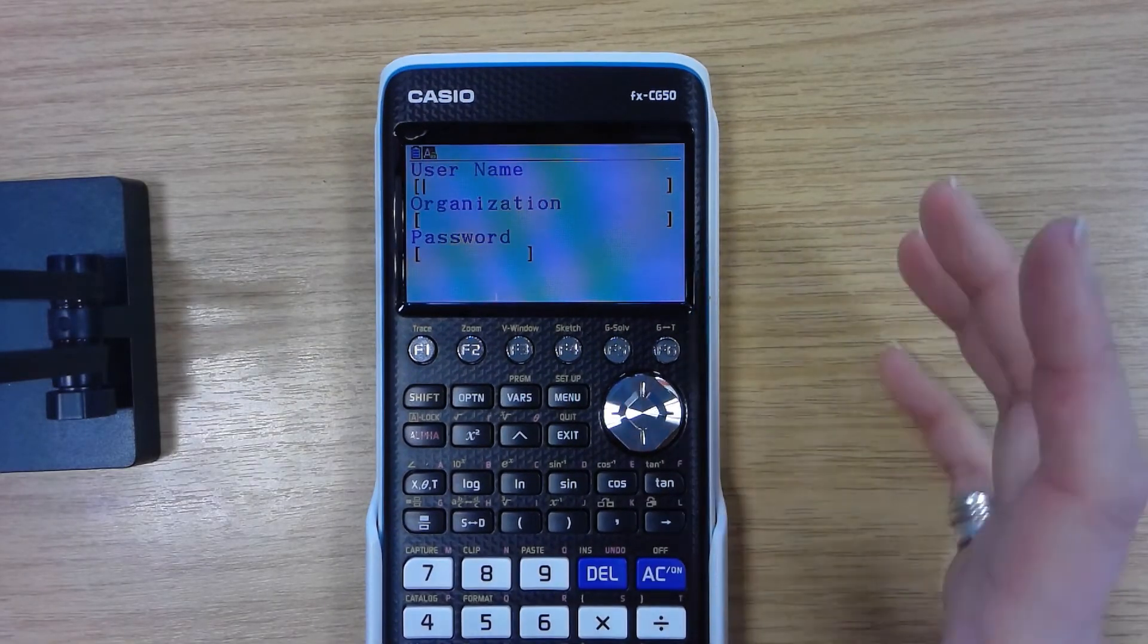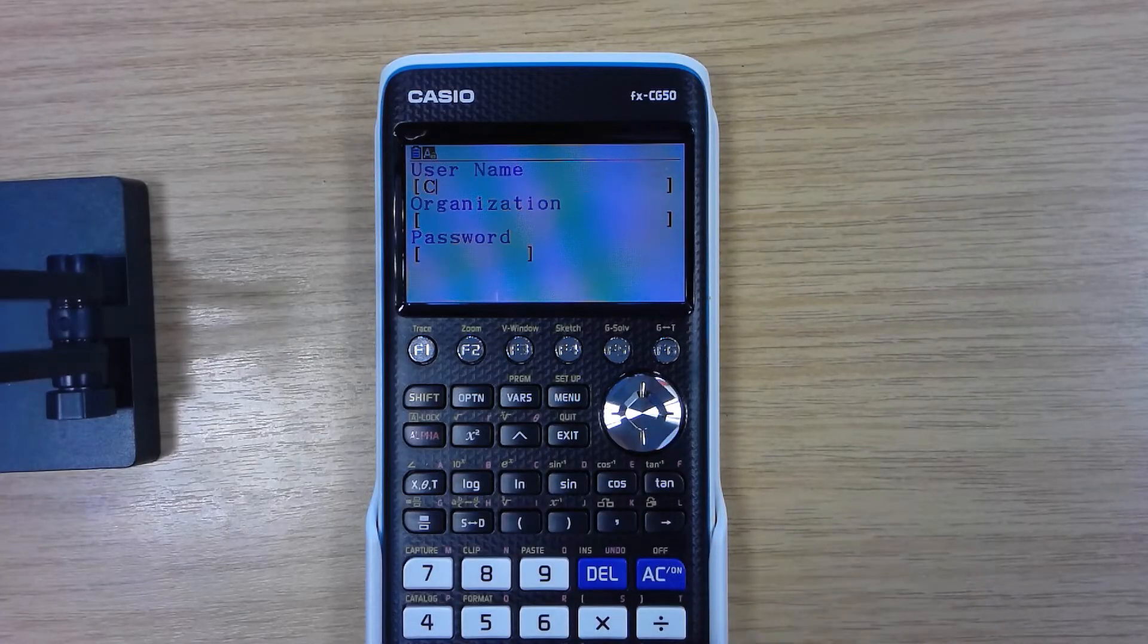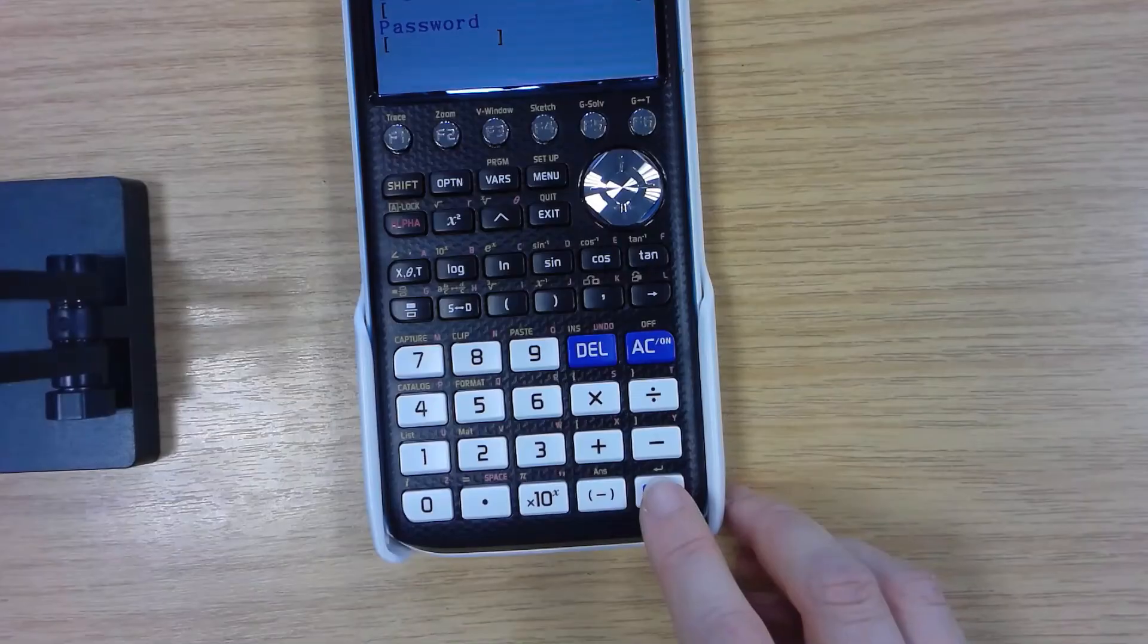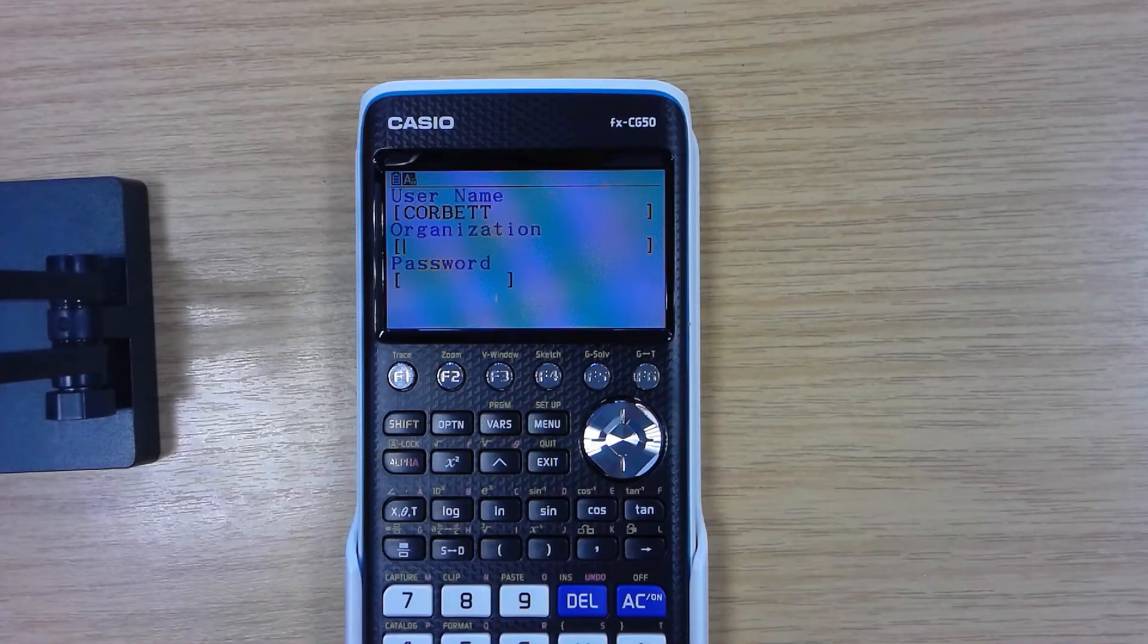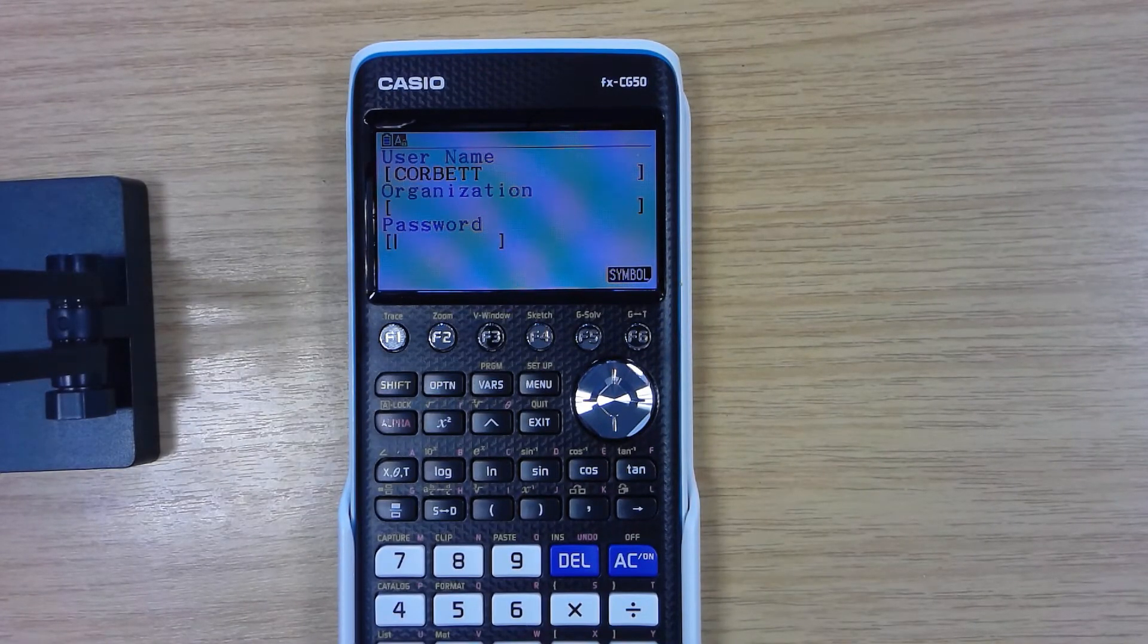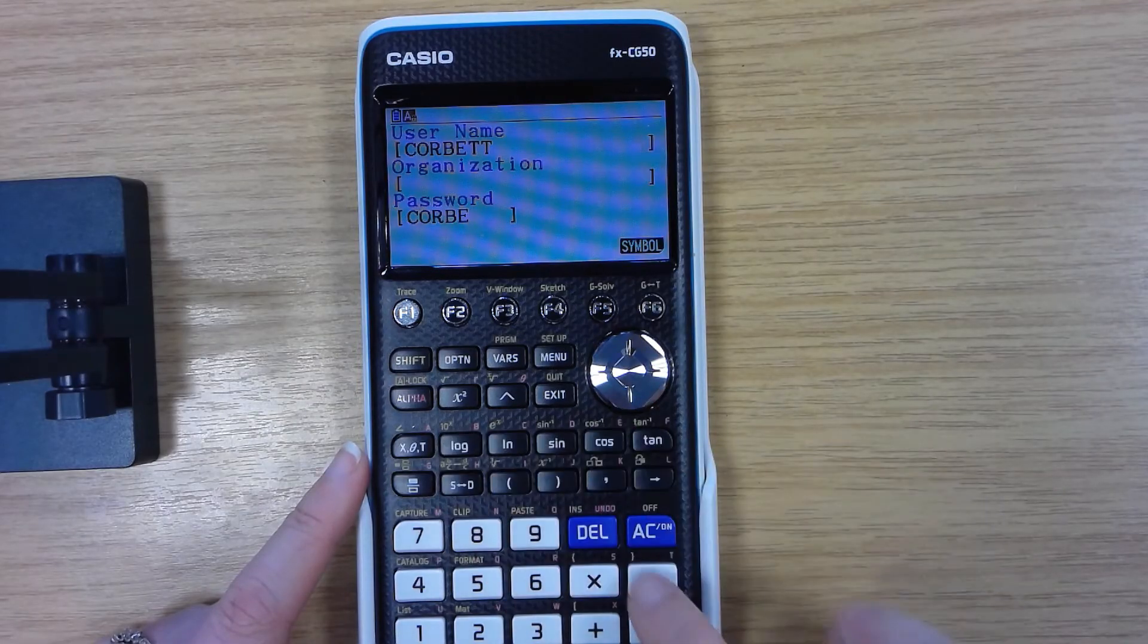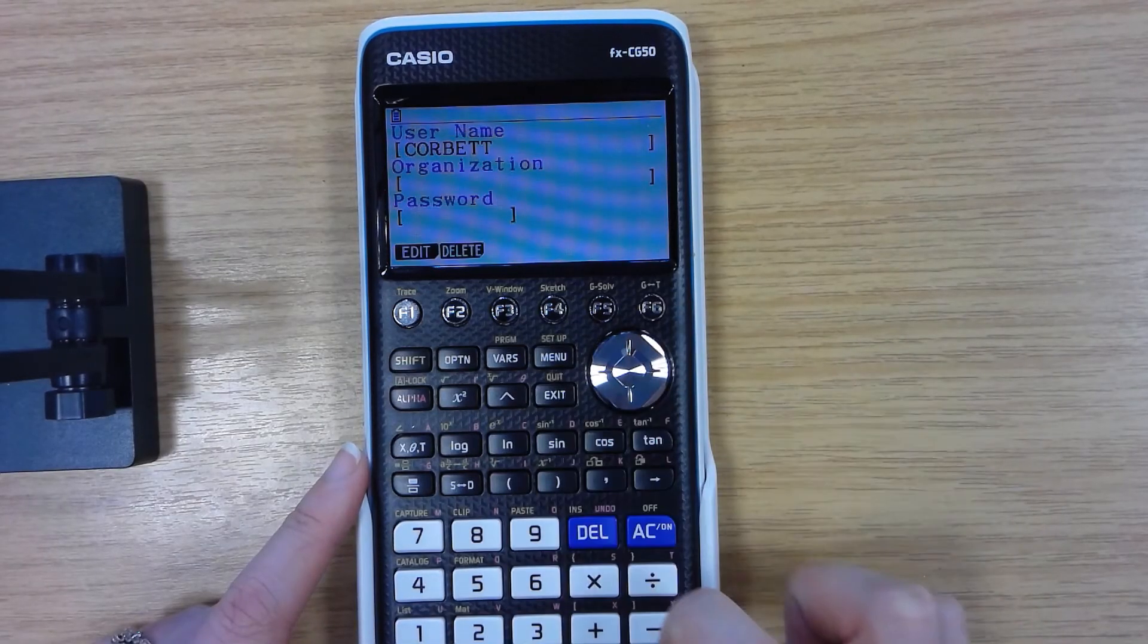Now because I've been doing lots of Corbett videos I'm going to call this Corbett so I go C O R B E T T. Execute, my new equal sign moves me down to the next line. Organization you can enter that if you want to and then down again to password. Your password is the thing that you need to do in order to change your username. I'm going to call this one Corbett. Execute, it says it will be registered F1 for that, exit to say it's complete.